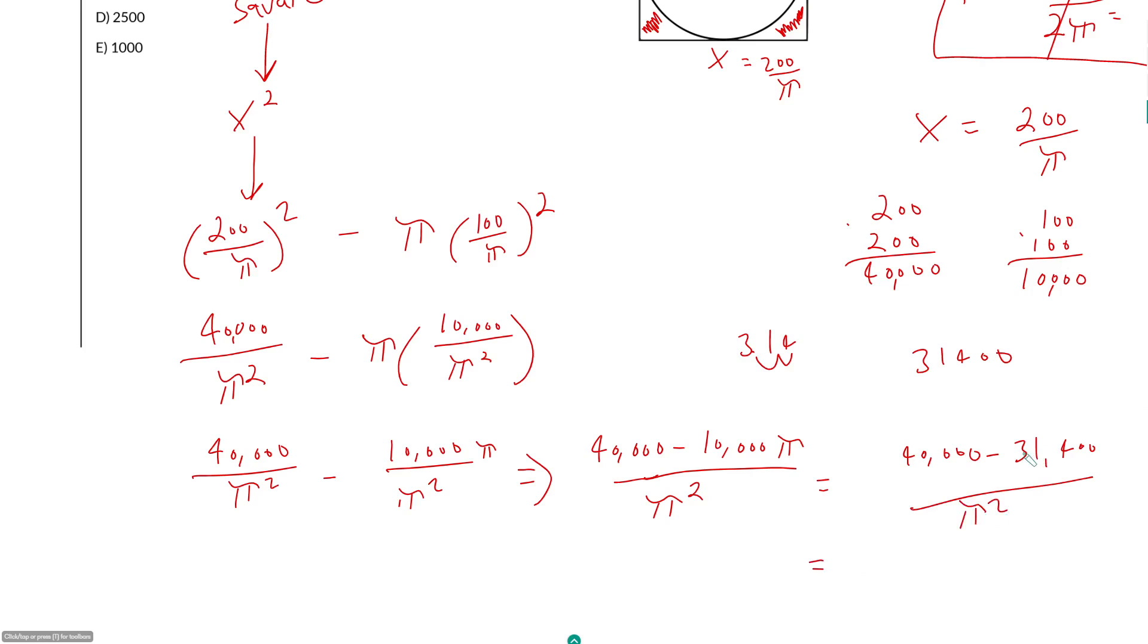So this is 40,000 minus 31,400 all over π squared. What would this be now if I just estimate this is 31,000? So 40,000 minus 31,000 just leaves me with 9,000. Then I could probably estimate π is just 3 here, so 9,000 over 9, approximately 1,000, E.